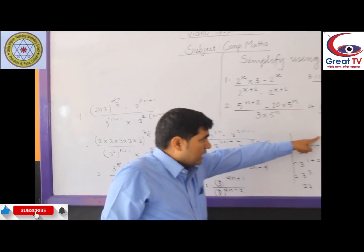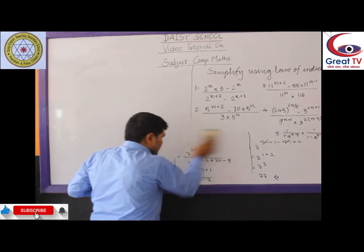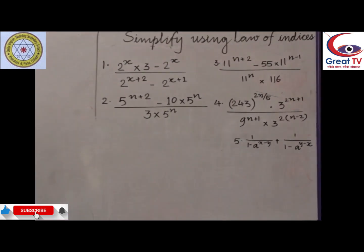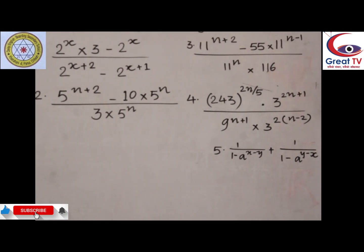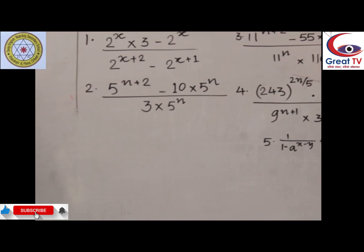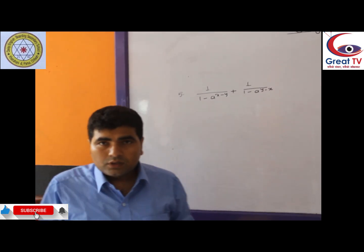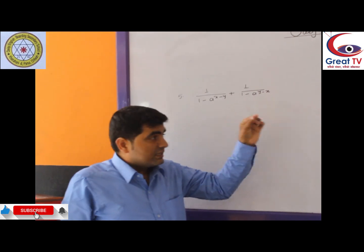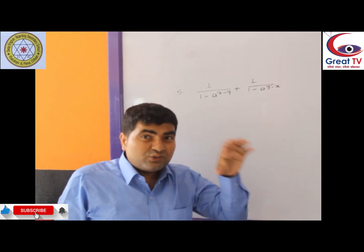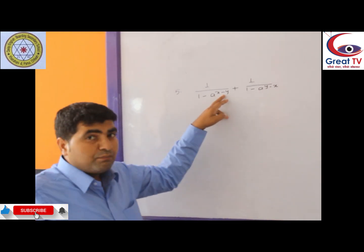Now today's video remaining is question number 5 — that is the 5th model question. I will do this one now. Question number 5: 1 divided by (1 minus a to the power x minus y) plus 1 divided by (1 minus a to the power y minus x). Now here, first of all remember the laws of indices — all 6 laws still apply. While you bring this to a common form, remember the minus in the exponent: a to the power (x minus y).